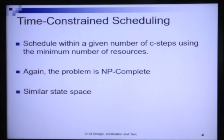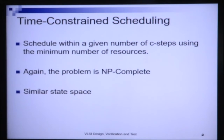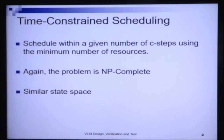We will be given that we must complete the scheduling within a given number of c steps, and with that upper bound on the number of c steps, I must try to minimize the amount of resources that I will use. This problem, like the resource-constraint scheduling problem, is an NP-complete problem and has a similar state space.